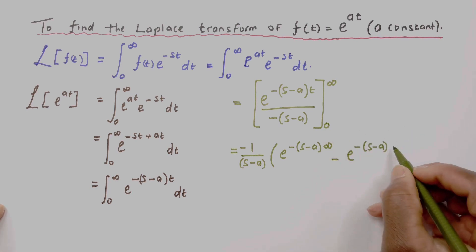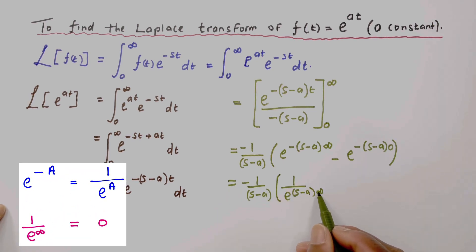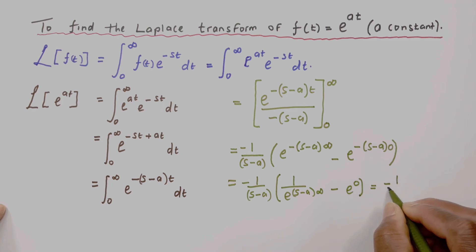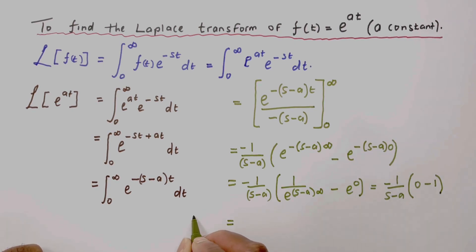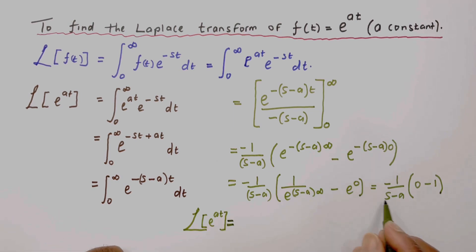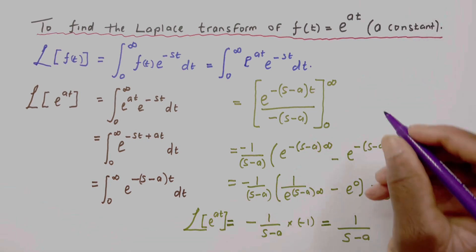Replacing t with infinity: e to the power infinity is infinitely large, so one over that equals zero. Replacing t with zero: e to the power zero equals one, giving minus one over (s minus a). So we have zero minus minus one over (s minus a), which simplifies to minus one over (s minus a) times minus one.